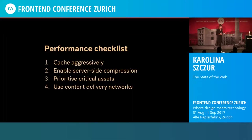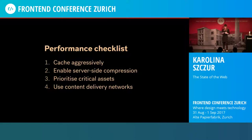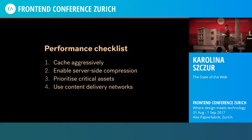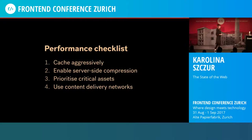If we were to talk about a performance checklist for all assets, there are more things you could do: aggressive caching, enabling server-side compression, preloading critical assets, and using content delivery networks. These three things basically ensure that the performance of all your assets will most likely be great. So let's go a little deeper and talk about one of the biggest performance offenders, which are images. Images account for most of the web page's transferred payload, which is why you can usually have the biggest performance savings in that area.